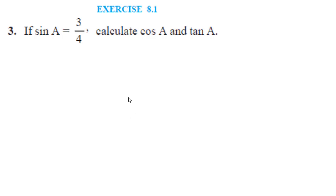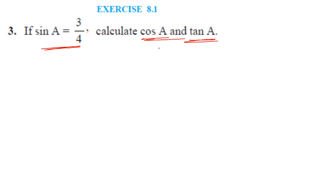In this video we are going to solve questions 3, 4, and 5 from NCERT Exercise 8.1. All three questions are direct questions based on the concept: if one trigonometric ratio is given, how to find the remaining five. Here in question 3, sine A is given to us as 3 by 4.